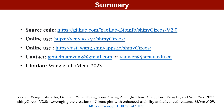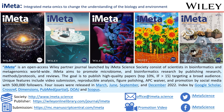The source code of ShinyCircos v2.0 is freely available on GitHub, and users can access ShinyCircos v2.0 online through either of two URLs. You are welcome to contact us by email with your valuable suggestions. If you used ShinyCircos v2.0 in your study, please cite our paper published in iMeta, a journal to change the world.